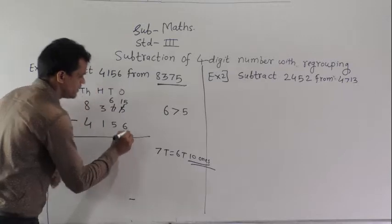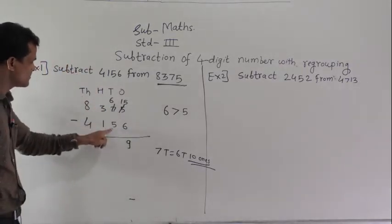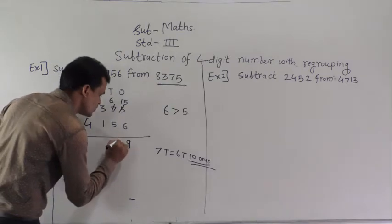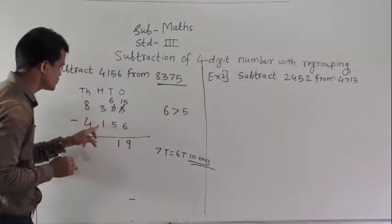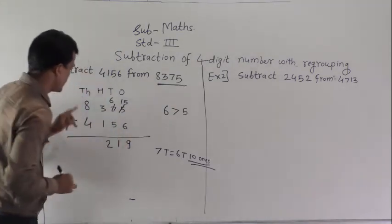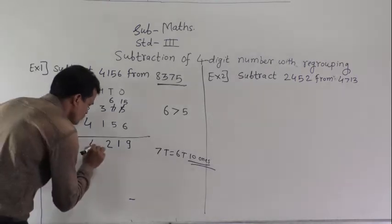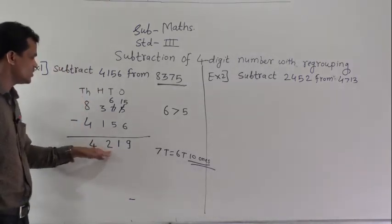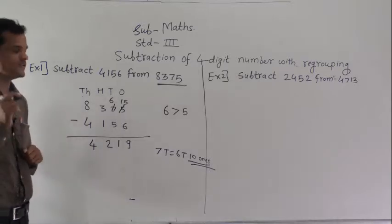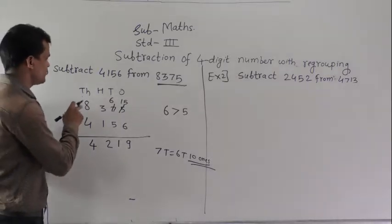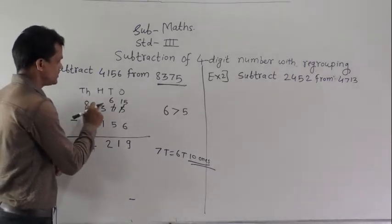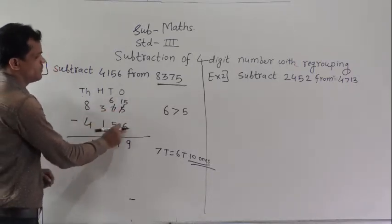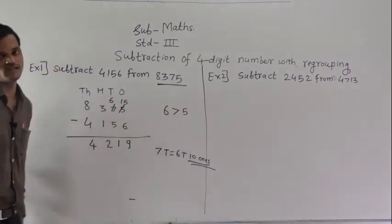Then the next step: 6 minus 5 equals 1, then 3 minus 1 equals 2, and 8 minus 4 equals 4. So 4,219 is the difference between 8,375 and 4,156.